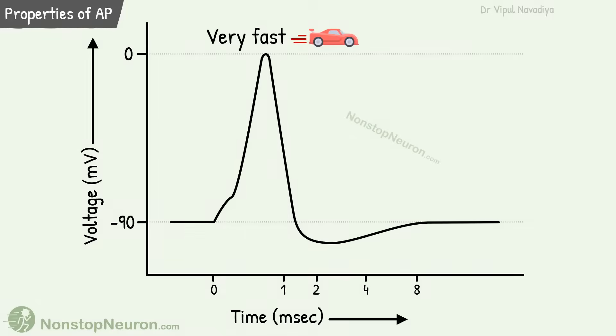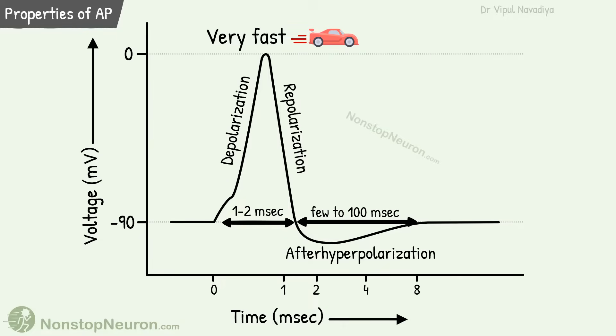Finally, the action potential occurs very fast. The duration of the main phase of action potential, that is from depolarization to repolarization, is only 1 to 2 ms. After polarization persists for few to 100 ms though.